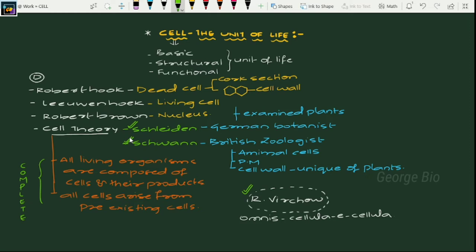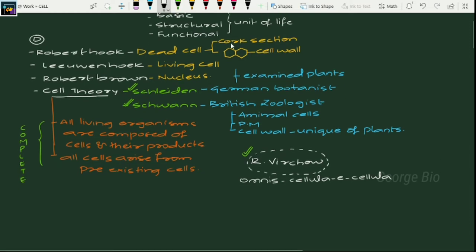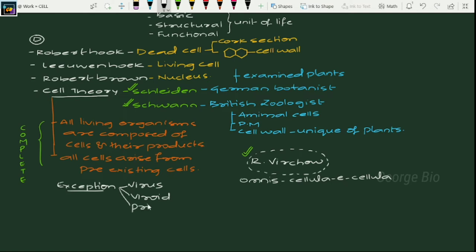They are considered as exceptions to cell theory. What are those exceptions? They include virus, viroid, and prions. These things come under exceptions to cell theory.